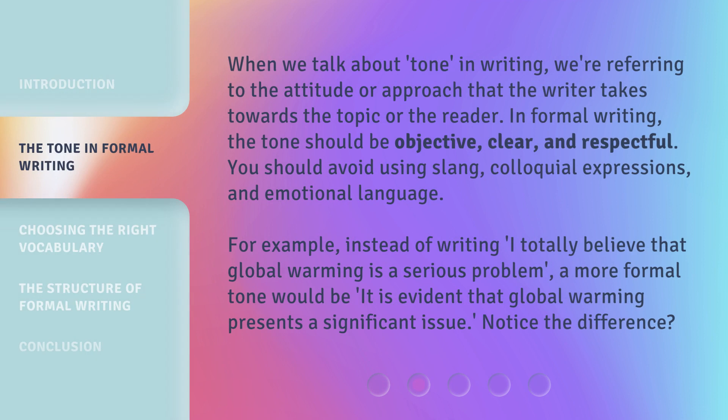When we talk about tone in writing, we're referring to the attitude or approach that the writer takes towards the topic or the reader. In formal writing, the tone should be objective, clear, and respectful. You should avoid using slang, colloquial expressions, and emotional language. For example, instead of writing, 'I totally believe that global warming is a serious problem,' a more formal tone would be: 'It is evident that global warming presents a significant issue.' Notice the difference?